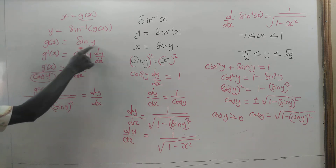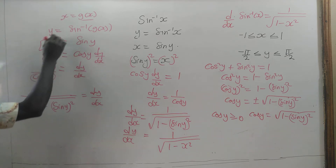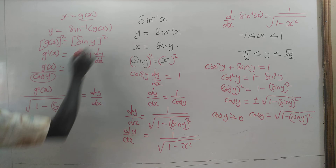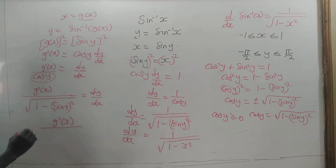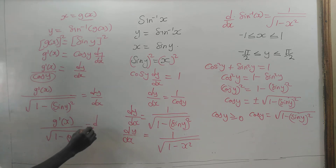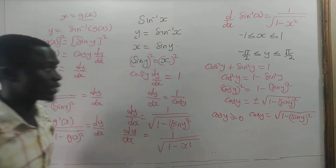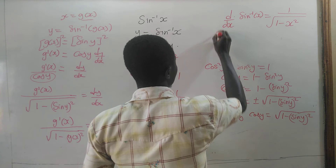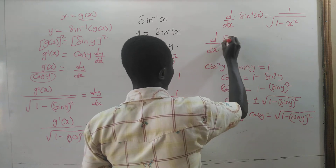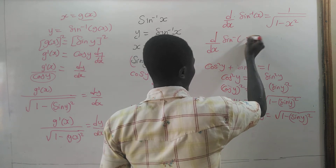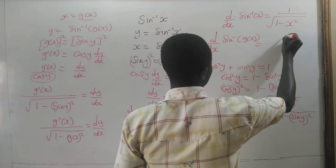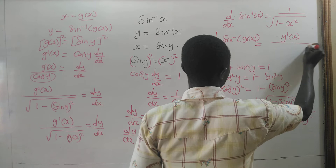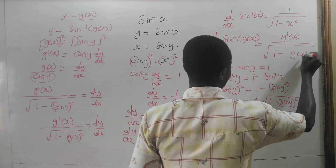Since sin y equals g of x, if I square both sides, sin squared y becomes g squared of x. So here, it will be g prime of x divided by the square root of 1 minus g squared of x, equal to the derivative of y with respect to x. And y is sin inverse of g of x. So the derivative of sin inverse of a differentiable function g of x equals the derivative of that function divided by the square root of 1 minus the function squared.